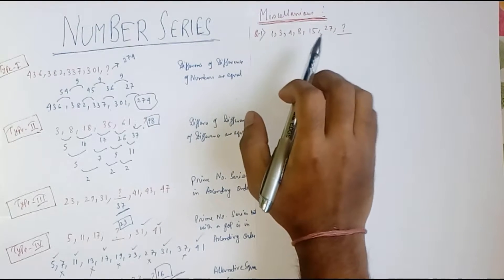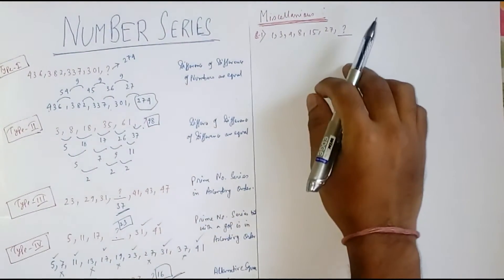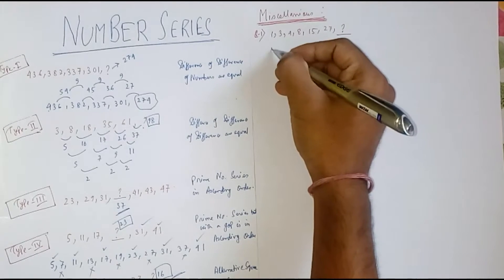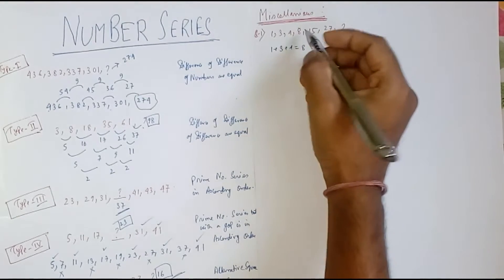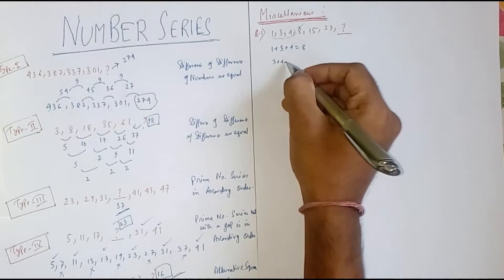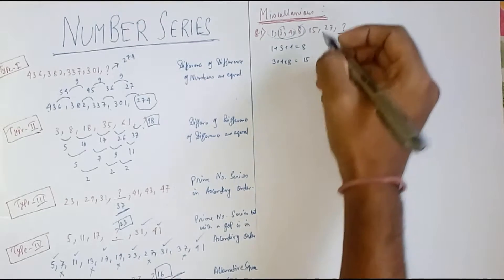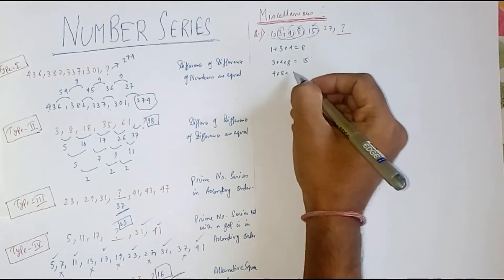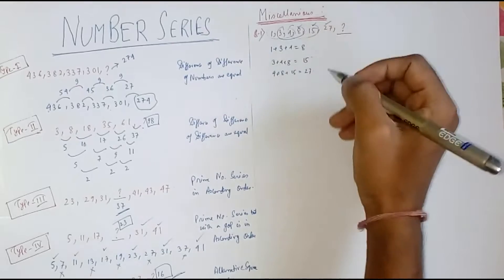From the first question: 1, 3, 4, 8, 15, 27 — what will be the next number? The trend is: if we add 1 plus 3 plus 4, we get 8. Similarly, 3 plus 4 plus 8 gives 12 plus 3 = 15. Then 4 plus 8 plus 15 gives 27. So we add three consecutive terms to get the next number.